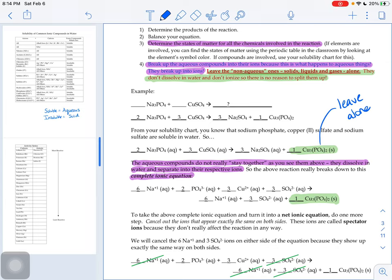So what we have here now, this line right here is called a complete ionic equation. It shows all of the ions that are participating in our reaction.